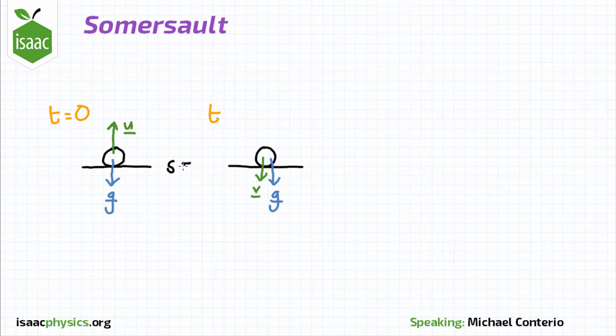At both of these points, the gymnast is at a displacement of s equals 0. As the acceleration is constant through the jump, we can use the equation of motion s equals ut plus a half at squared.